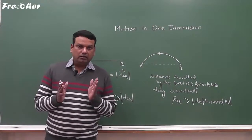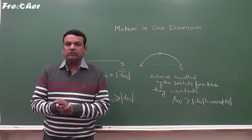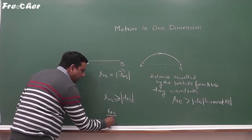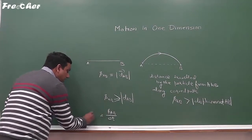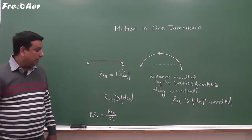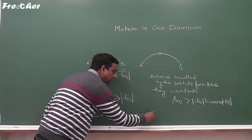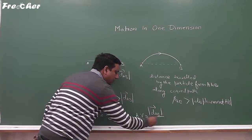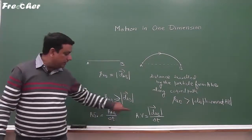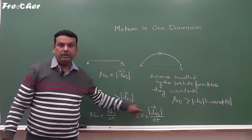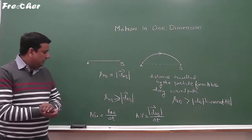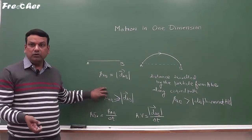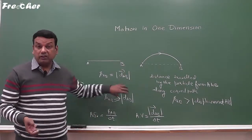Suppose the time taken in motion from A to B in either case is delta t. Then S_AB divided by delta t is average speed, and the average velocity of the particle is the magnitude of displacement AB divided by delta t. These average speed and average velocity are taken in magnitude only. We can now get a relation between average speed and average velocity corresponding to the relation between distance and displacement.